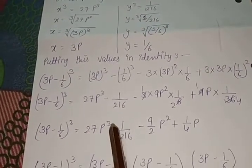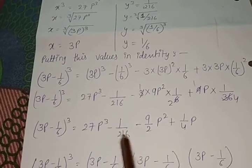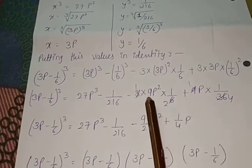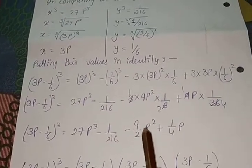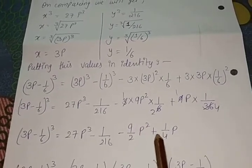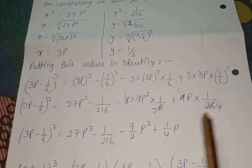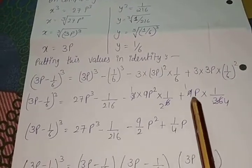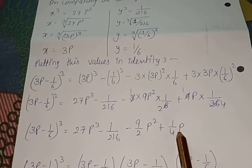After solution, 27p³ - 1/216 - 9/2 p² + 1/4 p. We have made the fractions and p is our coefficient as it is.